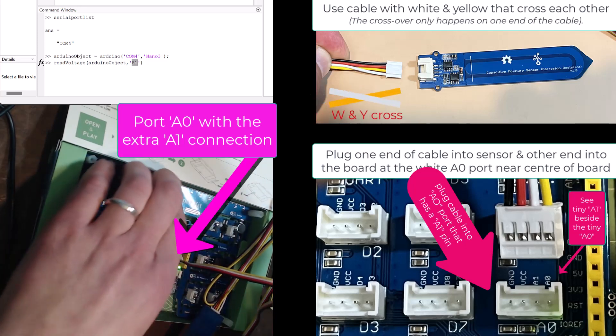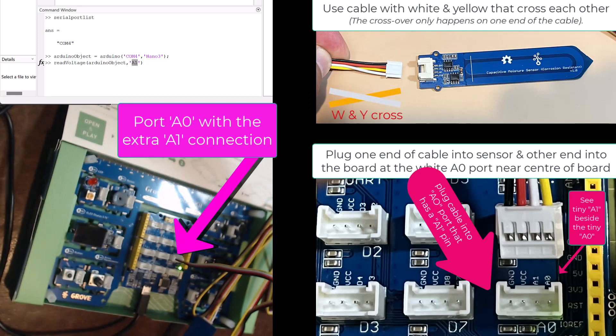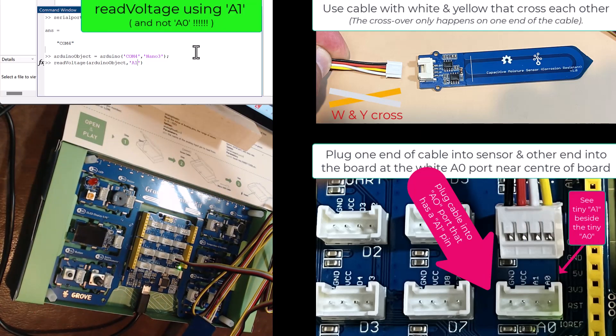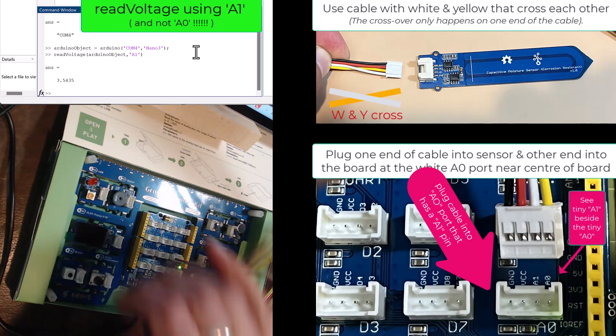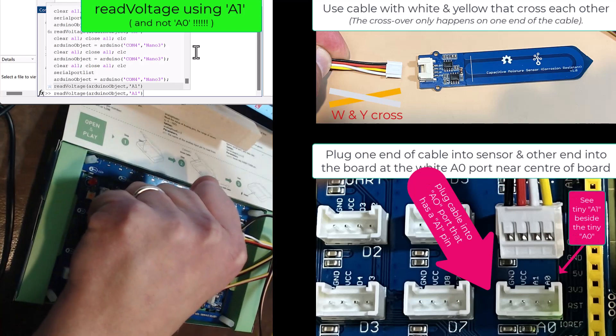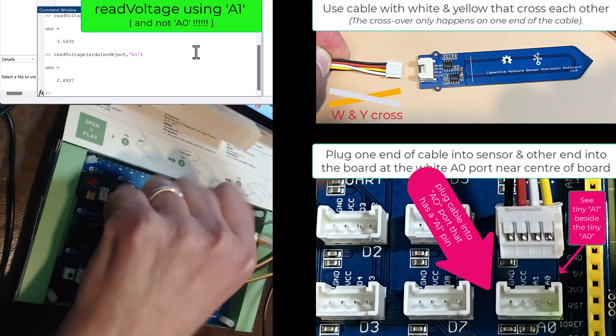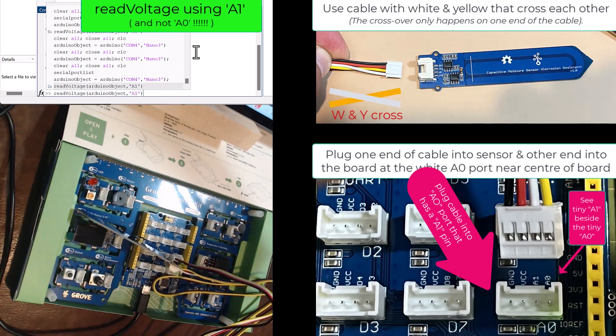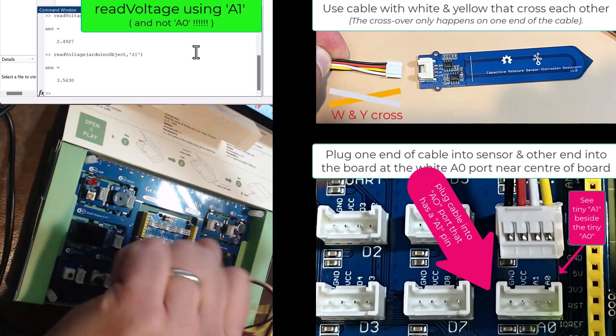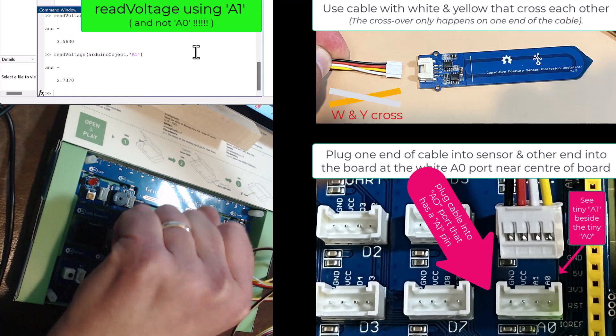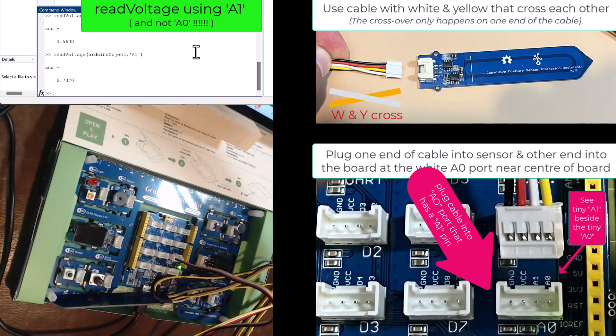That's now in. I'm going to do a measurement on A1. Now I'm going to hold it and measure again and it should give me a different voltage. Without holding it, back to 3.5. Holding it one more time should be down to the other value of 2.7, and we have a soil moisture sensor that works.